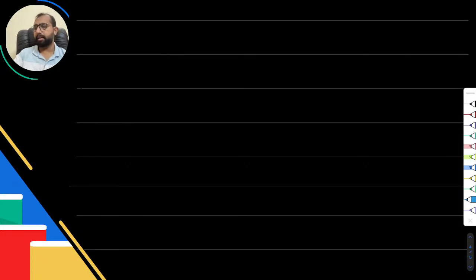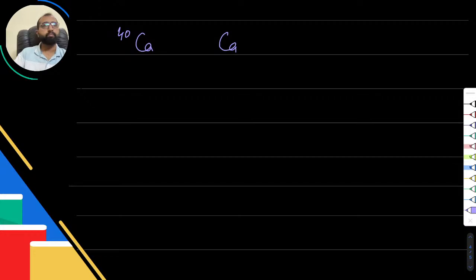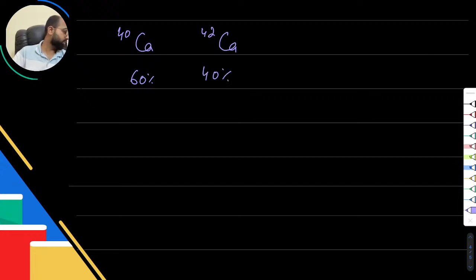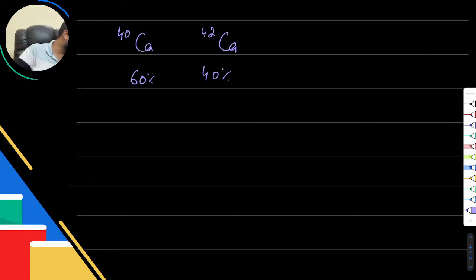Let's suppose we have a calcium example. Calcium-40 and Calcium-42. Assume Calcium-40 is present 60% of the time and Calcium-42 is present 40% of the time. Calculate the relative atomic mass and tell me what answer you get.